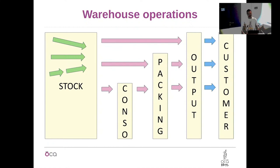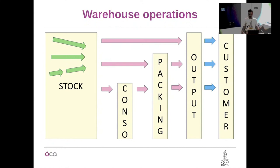Starting with the basics: when you place a sale order in Odoo and confirm it, that generates operations. The operations are based on the route coming from your warehouse configuration. In standard you can choose one step, two steps, three steps, or pick-pack-ship. Those operations — the stock pickings — are classified into what we call operation types, the stock picking type. In standard Odoo it's very basic: one configuration on your warehouse and that's it. In real life it's a lot more complicated and we need more advanced solutions.